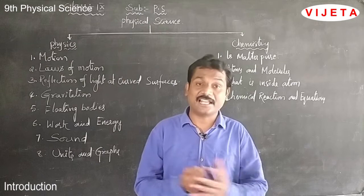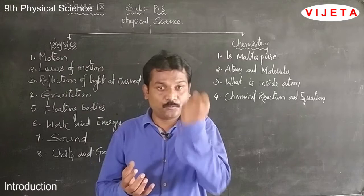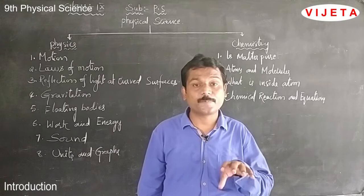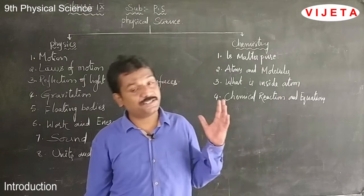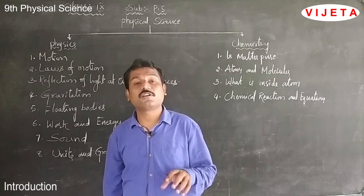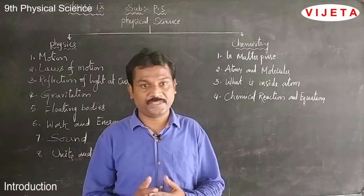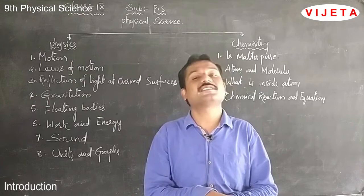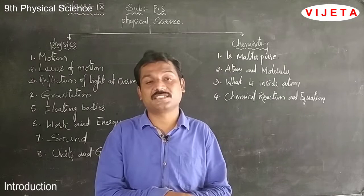We know that the earth always pulls any object — this gravitational force is called acceleration due to gravity. We will discuss what factors the acceleration due to gravity depends on, and whether it depends on mass or not. We are also going to discuss the stability of an object, that is, the center of gravity — what it means, how it shifts, what it depends on, and what happens if the center of gravity changes its position.